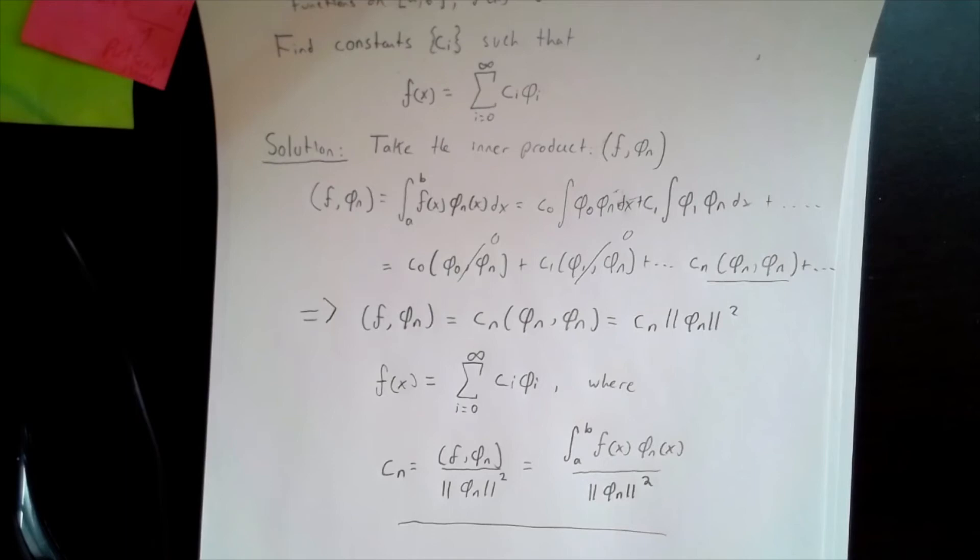Solving for the constant ci, we see that it's equal to the inner product of the function f and the function phi i divided by phi i's norm squared. We've therefore calculated the form of the constants so that the function f of x can be written as an infinite sum of these constants times the members of the orthogonal set.